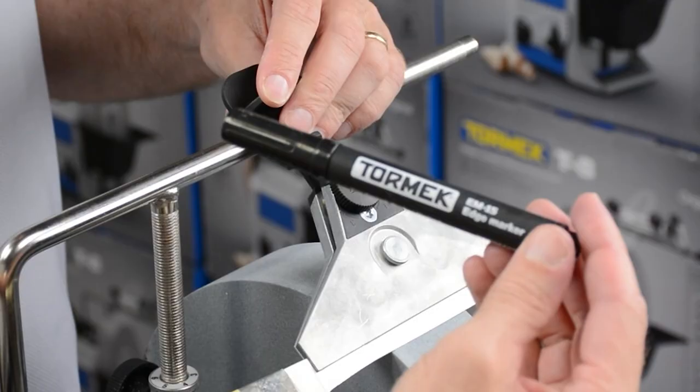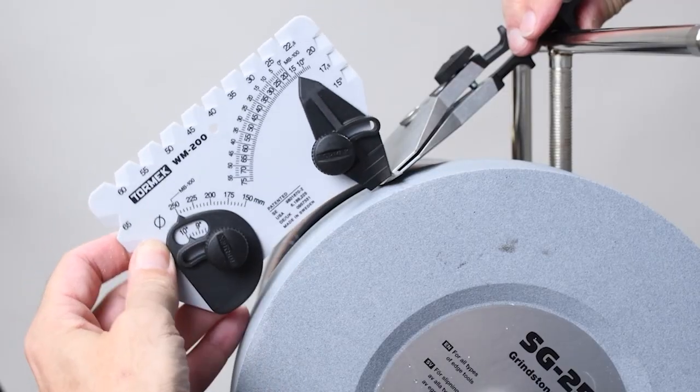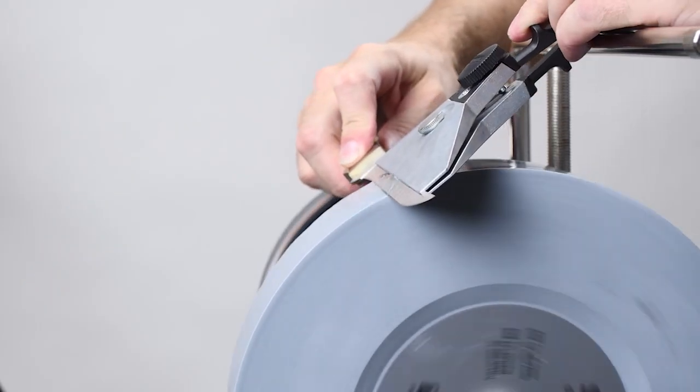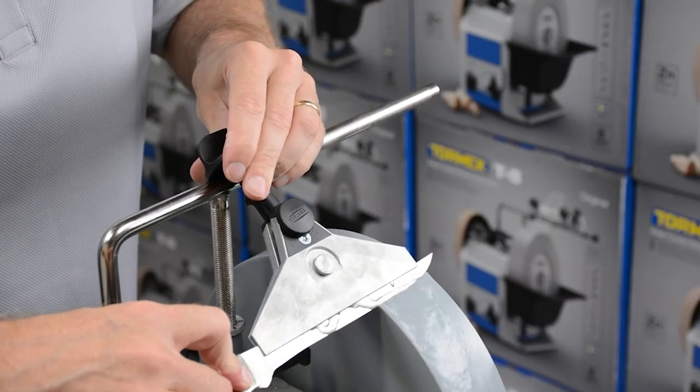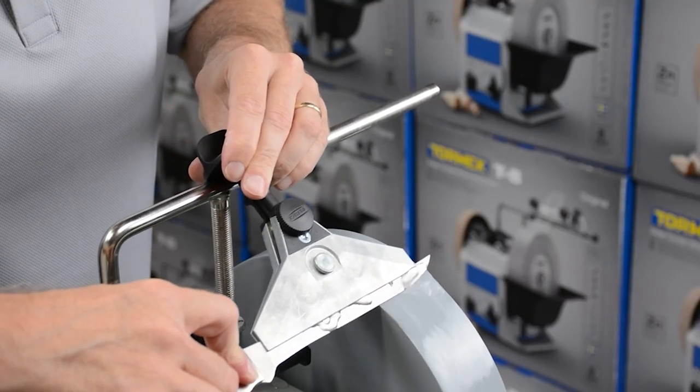Use the marker method or the WM200 Angle Master to set the desired angle. Move side to side across the wheel. Lift the handle to follow the curve of the blade.